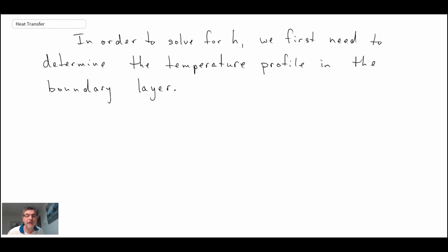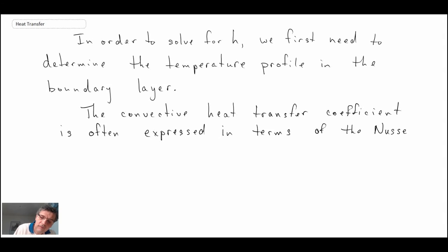In order to get the convective heat transfer coefficient, we need to know the temperature profile. Once we obtain H, what we do typically in fluid mechanics is we embed that within a non-dimensional number. And that number is the Nusselt number. There is the Nusselt number. What it is, it's the convective heat transfer coefficient times some characteristic length scale. In this case, X, the distance from the start of the plate, divided by the thermal conductivity of the fluid.